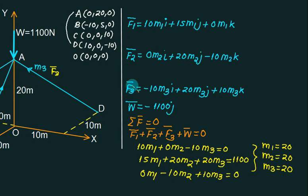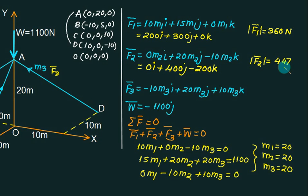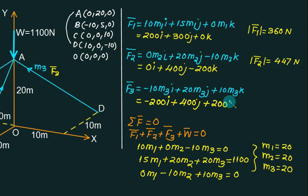Solving, we get m1, m2, m3 and substitute back. For F1: m1 is 20, giving 200·i plus 300·j plus 0·k, so mod of F1 is the square root of 200 squared plus 300 squared. For F2: m2 is 20, giving 0·i plus 400·j minus 200·k, so mod of F2 is the square root of 400 squared plus 200 squared. For F3: F3 equals minus 200·i plus 400·j plus 200·k, and mod of F3 is square root of 200 squared plus 400 squared plus 200 squared, which is approximately 489.99, close to 490.